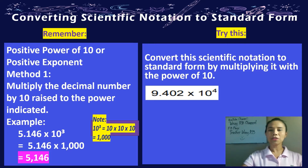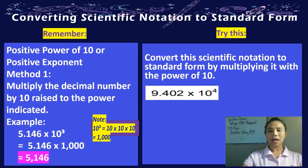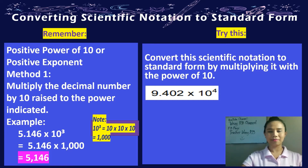9.402 times 10 to the fourth power. Try to multiply that with the power of 10, and don't forget that the exponent indicates how many times you multiply the base by itself.